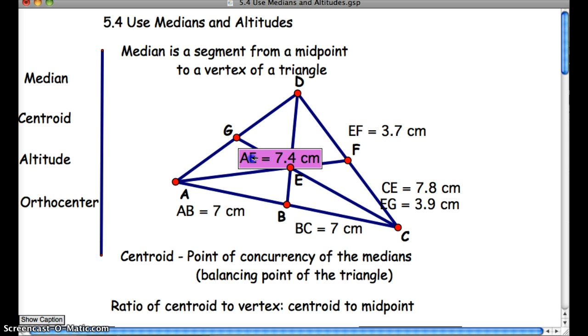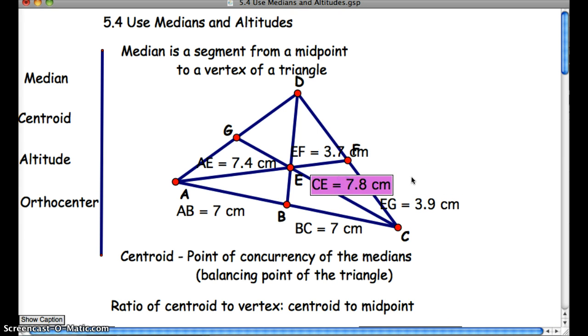Now let's look at these. AE is 7.4 centimeters, and EF is 3.7 centimeters. Pop that into your calculator and figure out what the difference there is. That's right. AE is 2 times the length of EF. Let's look at CE, 7.8, and EG, 3.9. Again, CE is 2 times the length of EG.